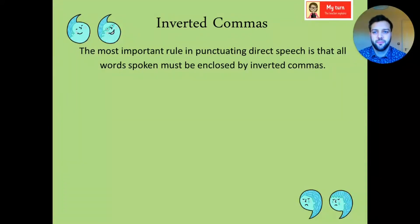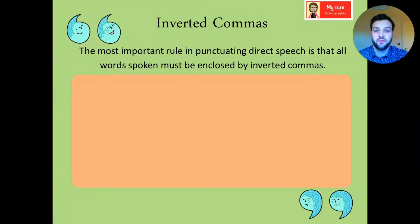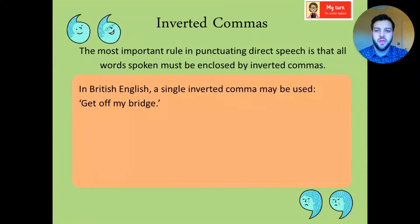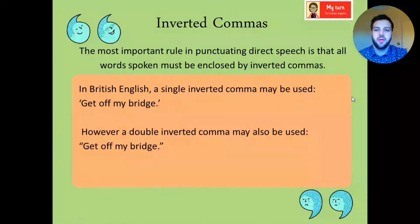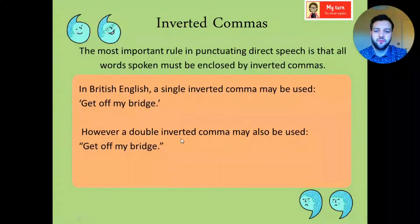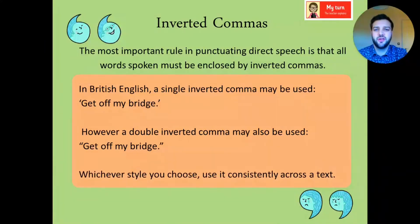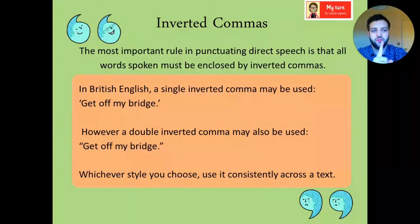So, inverted commas. The most important rule in punctuating direct speech is that all words spoken must be enclosed by inverted commas. So whatever is said has to have inverted commas around it. In British English, a single inverted comma may be used — just one little inverted comma. However, a double inverted comma — so two, like a 66 and a 99 as they used to be called — can also be used. They are both correct. Whichever style you choose, just use it consistently. Some authors use one, some use the other. We're going to use just one.